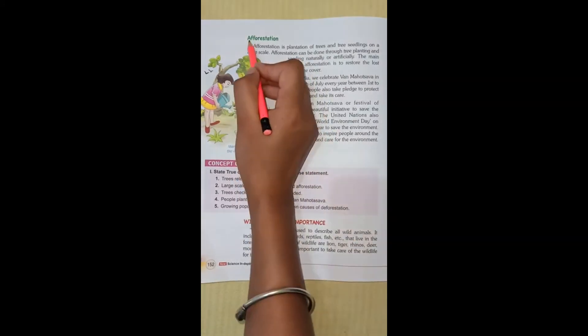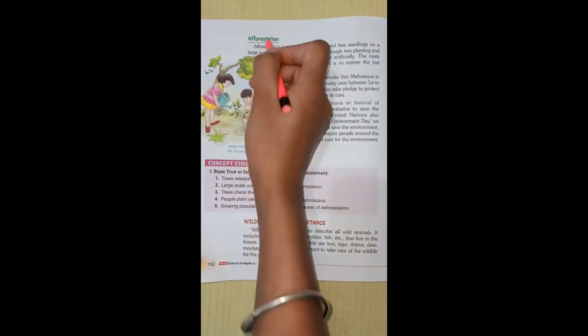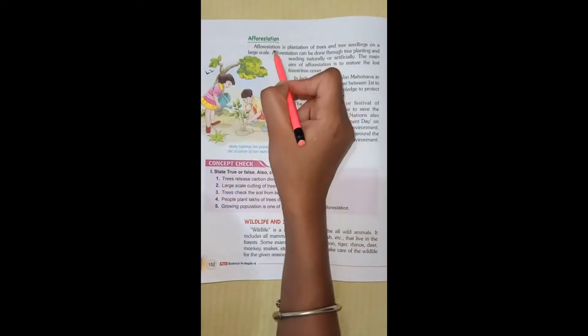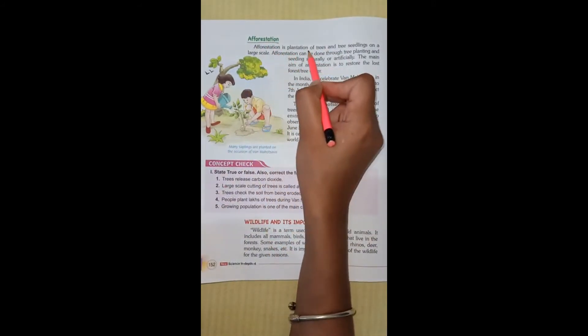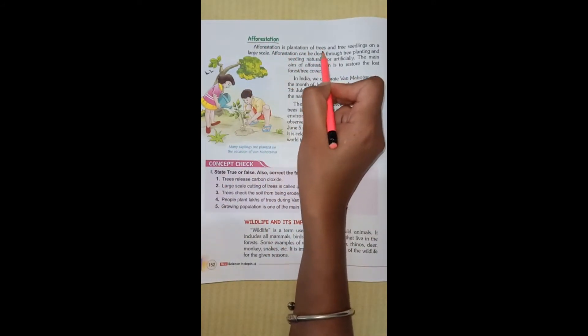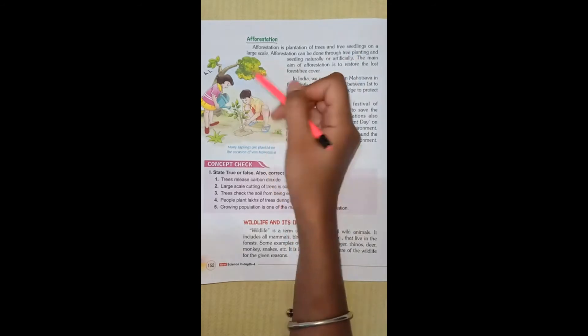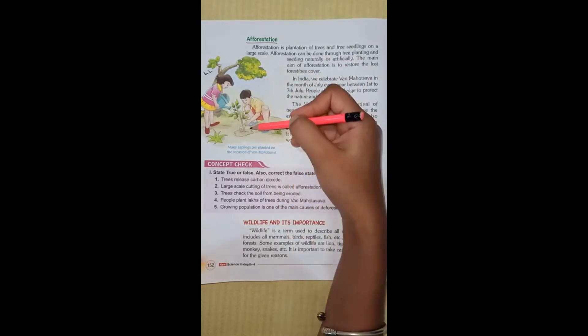The first word we discussed was deforestation — the cutting down of trees. The next word is afforestation — the planting of trees. Afforestation is the plantation of trees and tree seedlings on land to restore green cover.